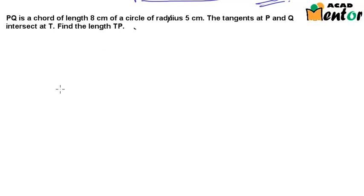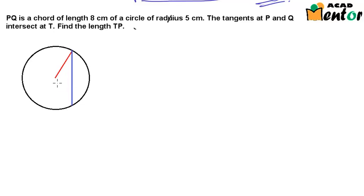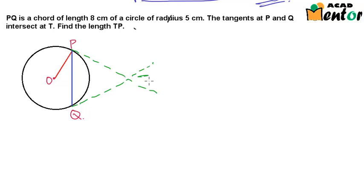The figure for this question would look something like this. Let the center of this circle be point O, and this is the chord PQ. The tangents at points P and Q intersect at point T. These green lines are the tangents. It is given that PQ is 8 cm and OP is 5 cm. We have to find out the length PT.